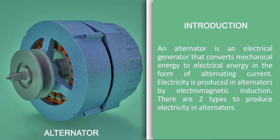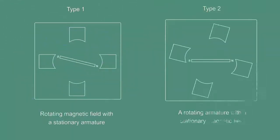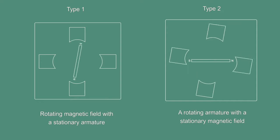An alternator is an electrical generator that converts mechanical energy to electrical energy in the form of alternating current. Electricity is produced in alternators by electromagnetic induction. There are two types to produce electricity in alternators: Type 1 rotating magnetic field.